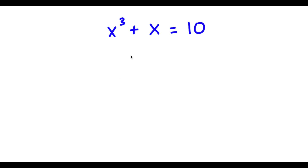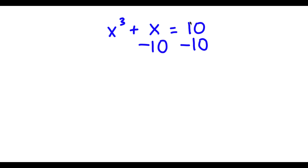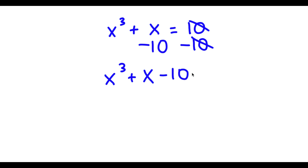All right, so in this problem I have x to the power of 3 plus x is equal to 10. To solve this, I'm going to first start by subtracting 10 on both sides. So now I have x to the power of 3 plus x minus 10 is equal to 0.